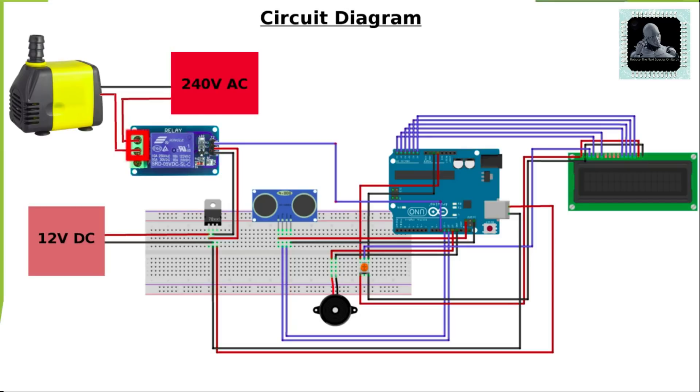Common pin of the relay is connected to positive terminal of the submersible water pump. Similarly normally open port is connected to AC phase. Pin A0 to A5 is connected to LCD display. Voltage regulator will provide 5 volt operating voltage to Arduino. Similarly relay is operated by 12 volt DC.